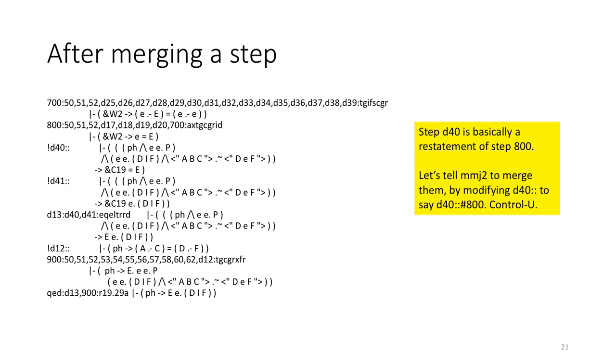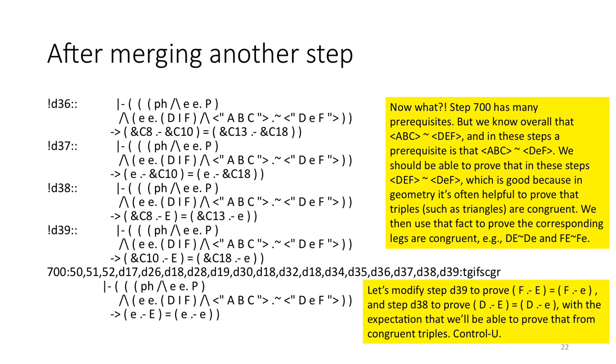Step D40 is basically a restatement of step 800, so we'll tell MMJ2 to merge them. We'll change that D40 colon colon into D40 colon colon sharp 800, CTRL-U. Okay, now what?